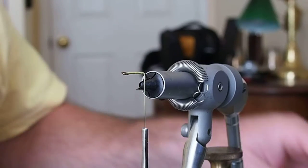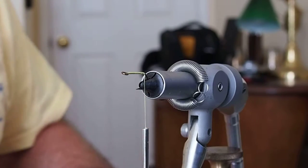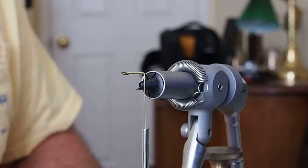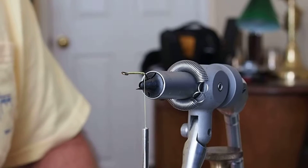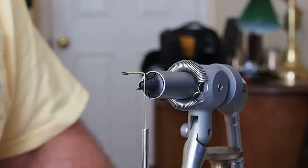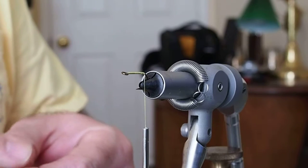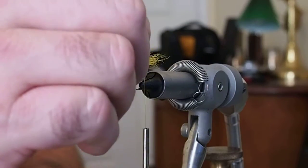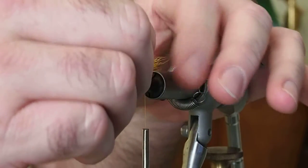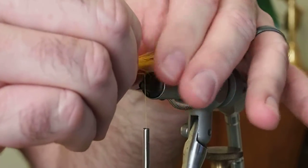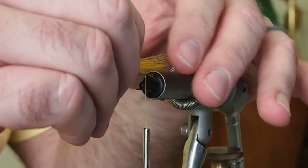And next we're going to tie in some yellow kip tail for the tail of the fly. And the instructions say to keep the tail short and stubby, but to tie in a length of hair, the length of the shank of the hook just to build up a bit of a body.